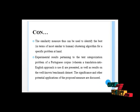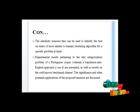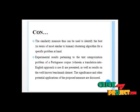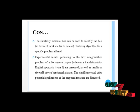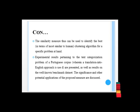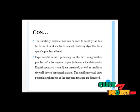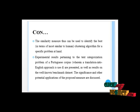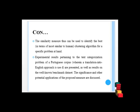Experimental results pertaining to the text categorization problem of a corpus, wherein a translation into English approach is usually used, are presented, as well as results on a well-known benchmark dataset. The significance and other potential applications of the proposed measure are discussed. In our proposed system, we have to find out the best measure of similarity for text classification and clustering, and finally produce the best similarity measure.